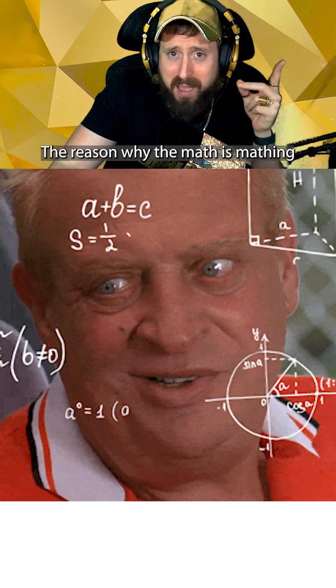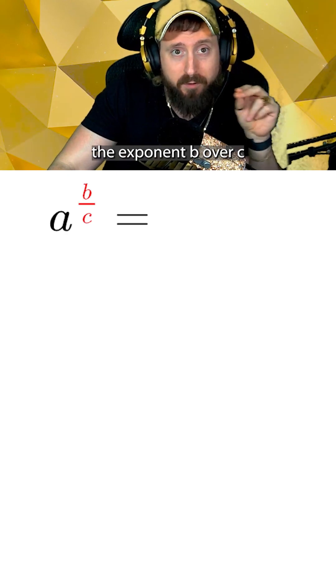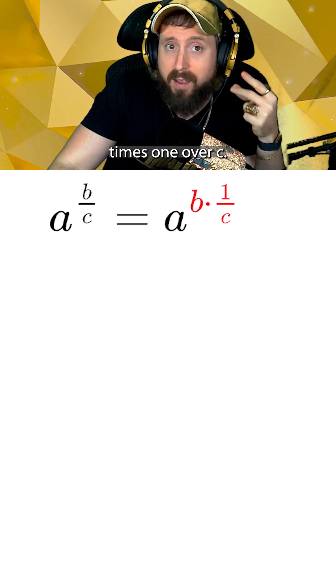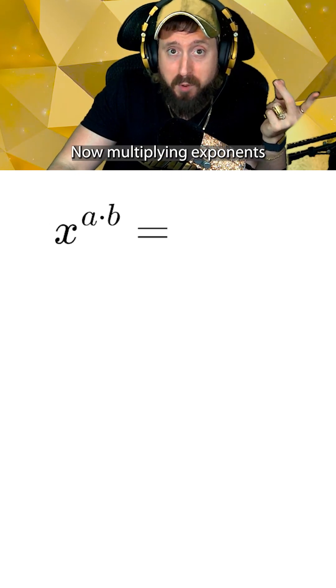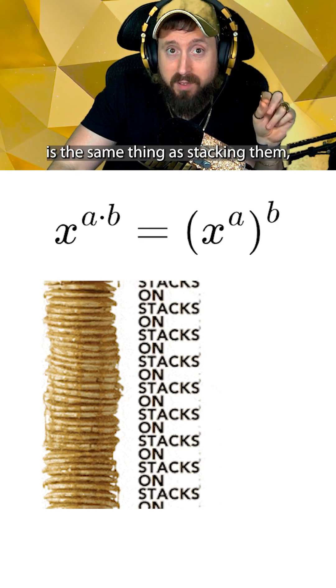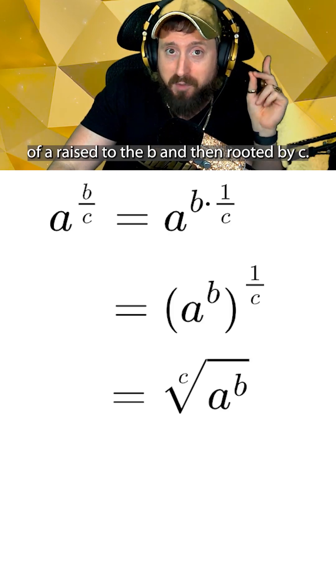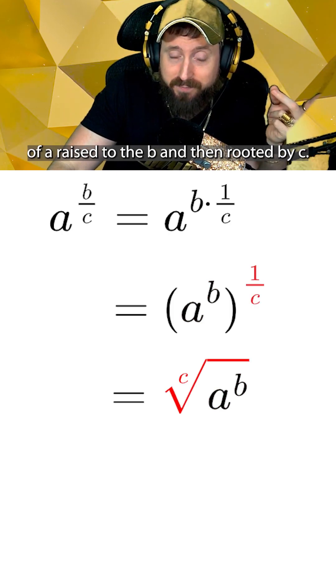The reason why the math is mathing here is because we can rewrite the exponent b over c as two exponents multiplying by each other, b times 1 over c. Now multiplying exponents is the same thing as stacking them, aka raising an exponent to another exponent, which gets us the usual answer of a raised to the b and then rooted by c.